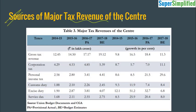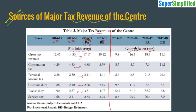Looking at sources of tax revenue: this table shows major tax revenues of the center across 2014-15, 2015-16, 2016-17 (provisional), and 2017-18 (budgeted estimates). Gross tax revenue has increased. Corporate tax increased, personal income tax increased, customs duty increased, excise duty increased significantly, and service tax also increased. The maximum increase is in personal income tax — partly due to compliance improvements after demonetization and partly because salaries increased under the Seventh Pay Commission.